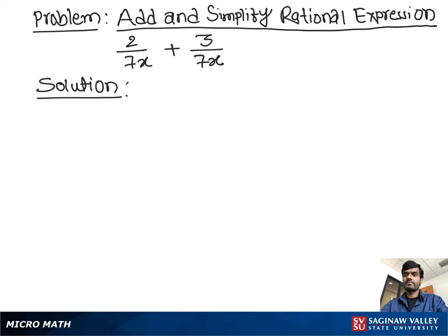Add and simplify the rational expression 2 over 7x plus 3 over 7x. Let's write the problem one more time: 2 over 7x plus 3 over 7x. First, we have to identify whether it has the same denominator or unlike denominators.